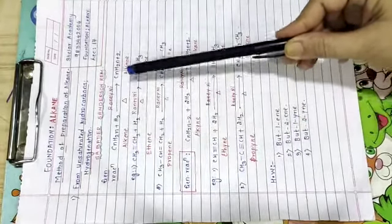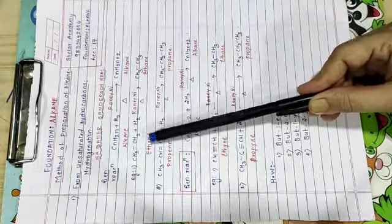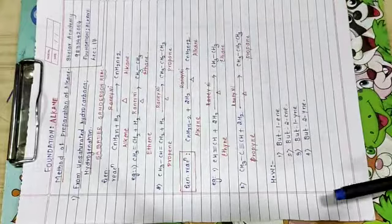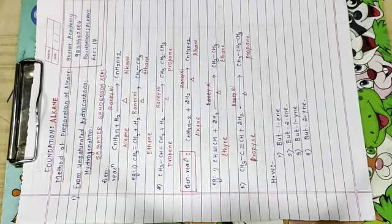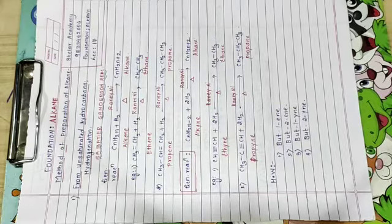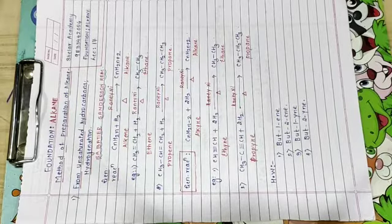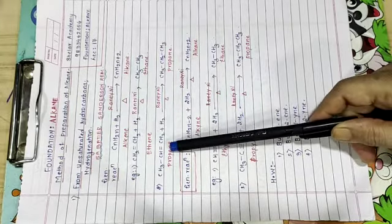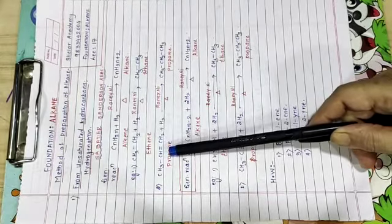Alkene se kya mila? Alkane. Ethene se kya mila? Ethane. Now the next example we have written with propene. First of all, how do we write the structure of propene? Prop means 3. Ene means there is a double bond between the carbon atoms. So what is this? This is the structure of propene. Where there is a double bond.